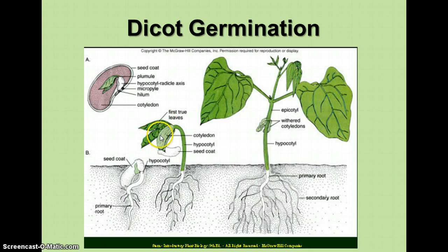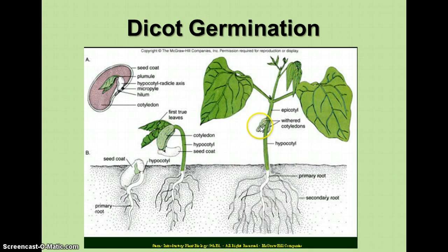As the plant develops those first true leaves, it can then undergo photosynthesis. As the food is used up in the cotyledons, they wither and fall off at the bottom of the plant. You end up with a primary taproot with secondary roots coming off of it — that's dicot germination.